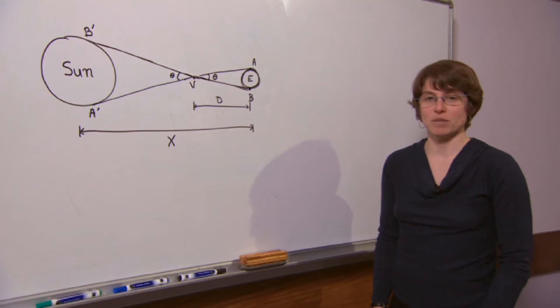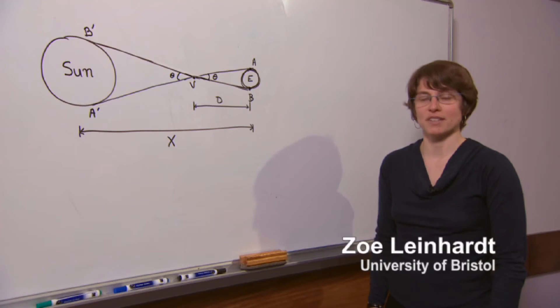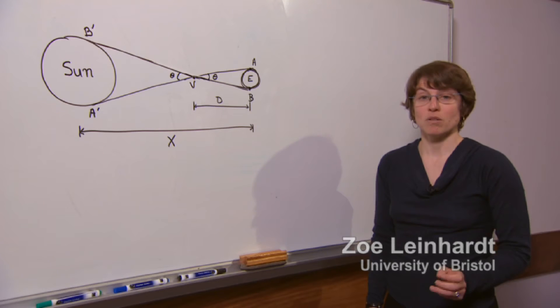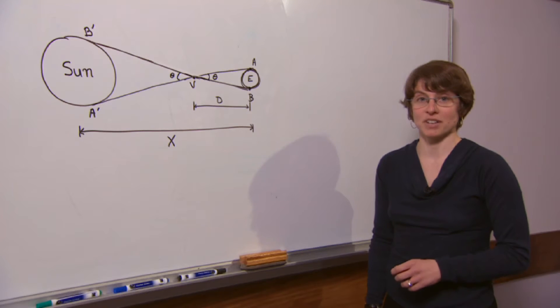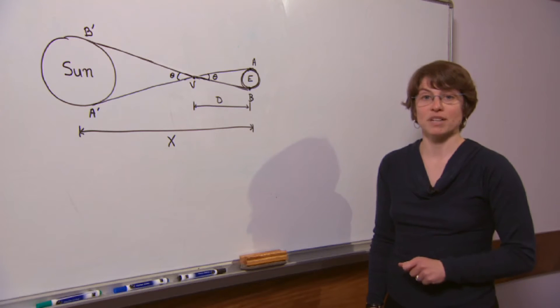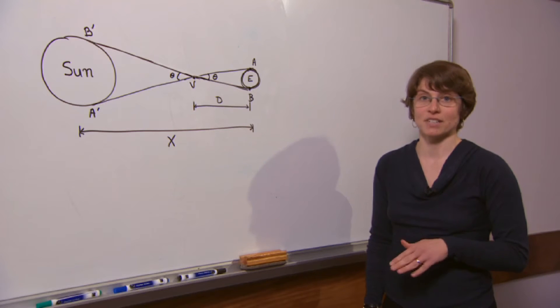The transit of Venus occurs when Venus passes directly between the earth and the Sun. This is observed as a dark spot passing over the bright disk of the Sun. Now the transit of Venus is a relatively rare event because the orbits of Venus and the earth are inclined with respect to each other.